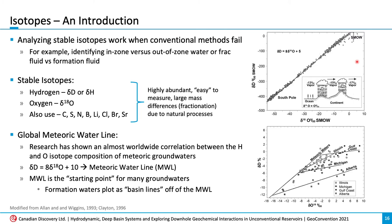The meteoric waterline is a starting point for many groundwaters, and formation waters plot as a basin line off the meteoric waterline, as demonstrated on this figure here.